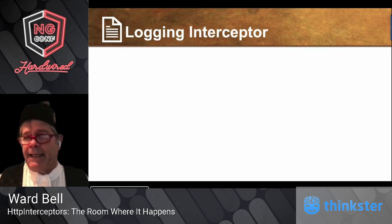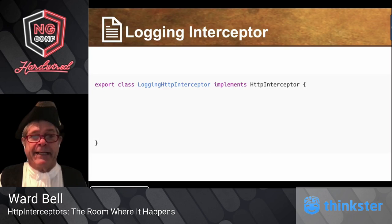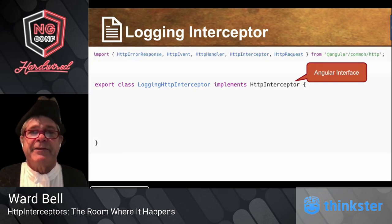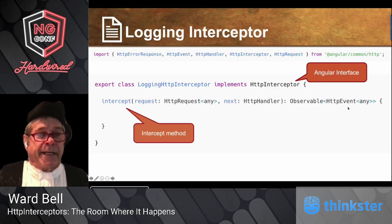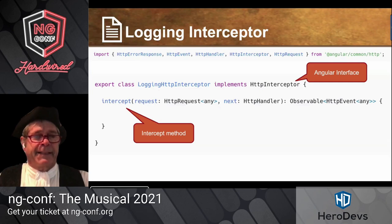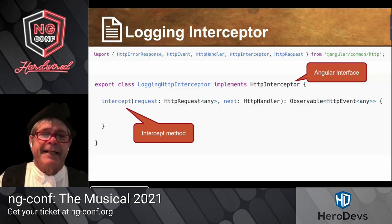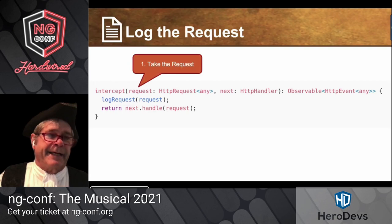Let's jump right into one and see the structure. We're going to write a logging interceptor, and it's a class that implements an Angular interface. All of the interfaces you'll need are in the HTTP client library at @angular/common/http. The interface has only one method and it's called intercept. It takes a request and a funny thing called an HTTP handler, and it returns an observable.